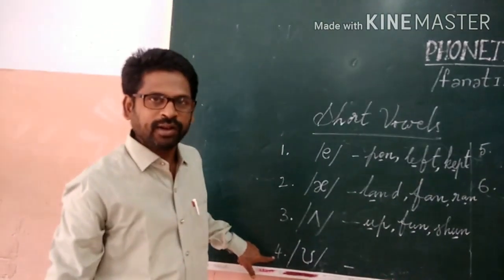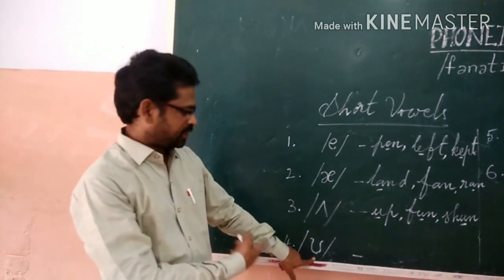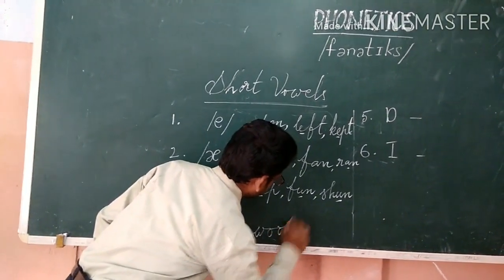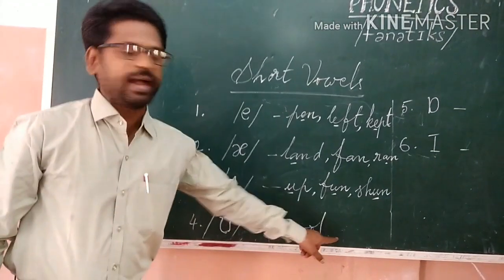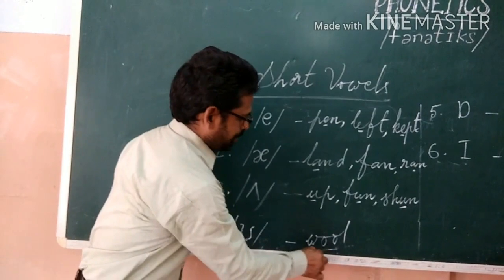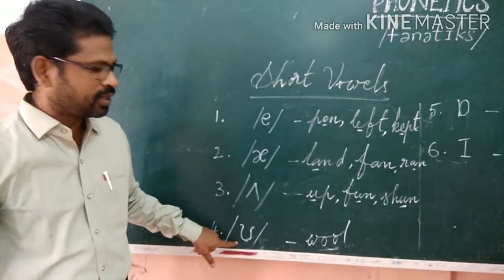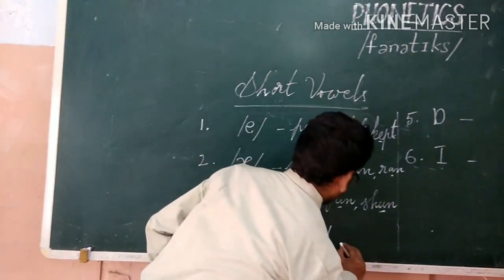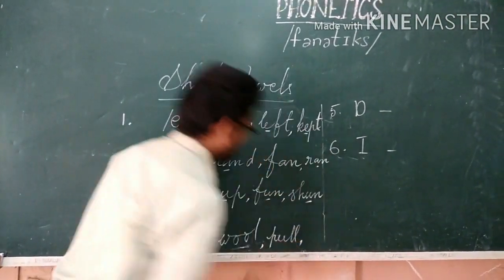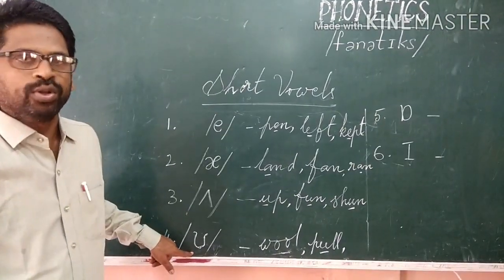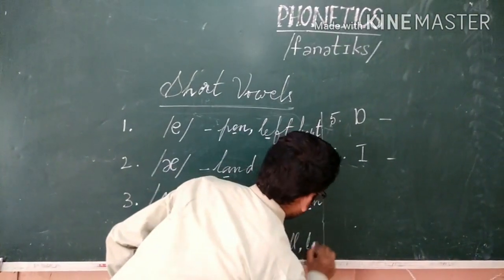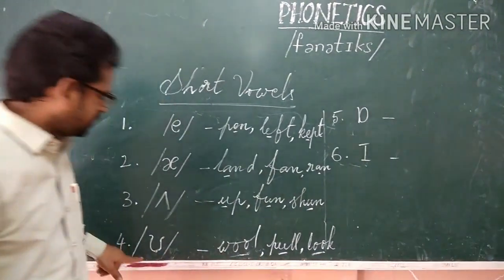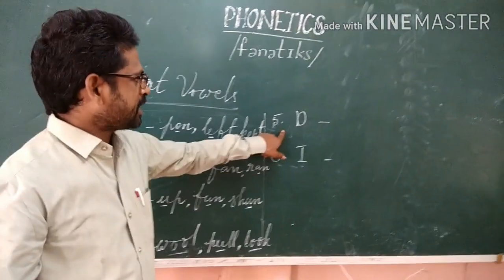The fourth symbol is U. Example: W-O-O-L — wool. There are two O's and the pronunciation is a short sound. Also P-U-L-L — pull. L-O-O-K — look. Two O's are there still, it is a short sound.